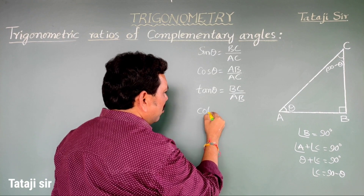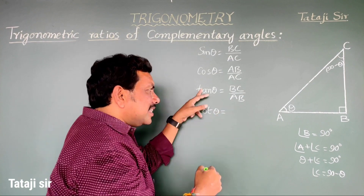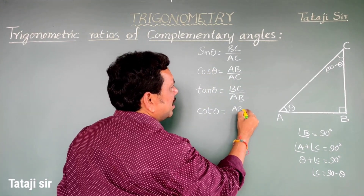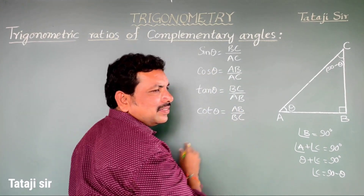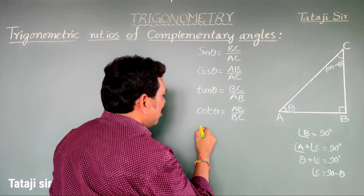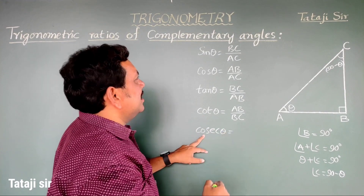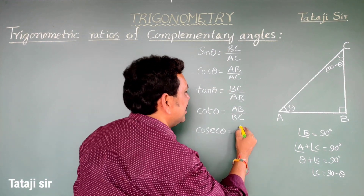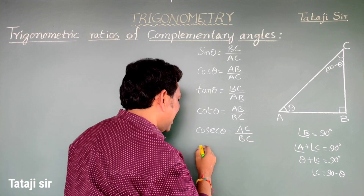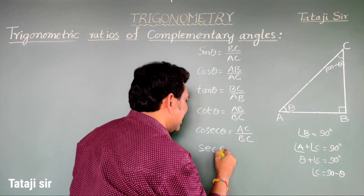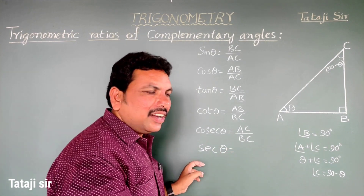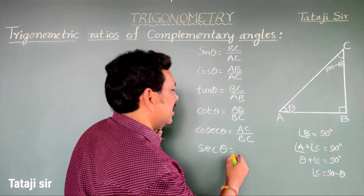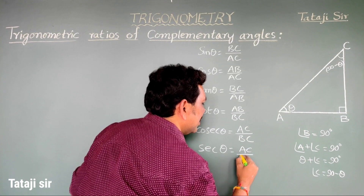Continuing for theta: cot theta is the reciprocal of tan theta, that is AB by BC. Cosecant theta is the reciprocal of sine theta, that is AC by BC. Secant theta is the reciprocal of cos theta, that is AC by AB.